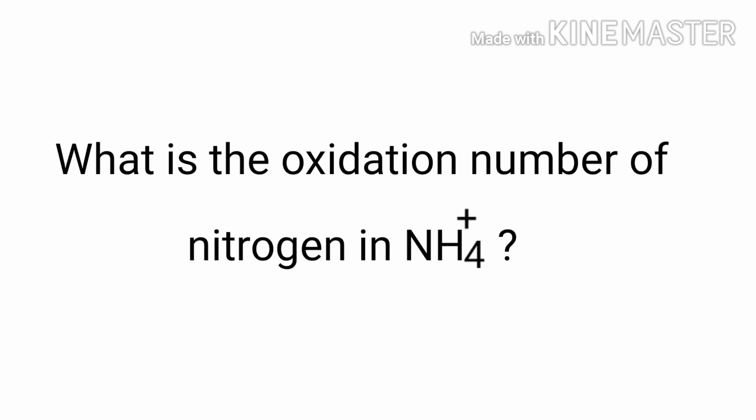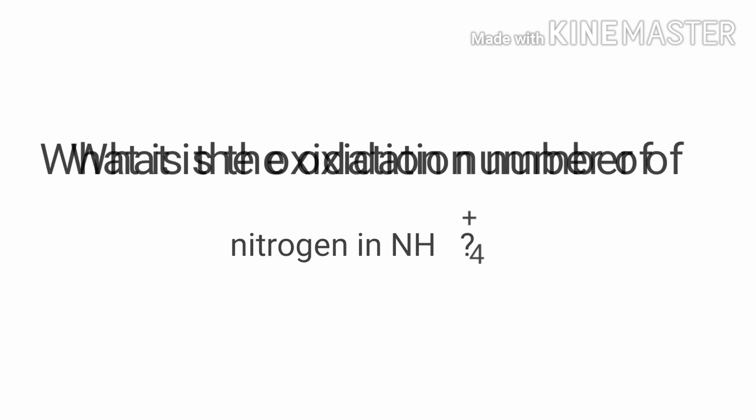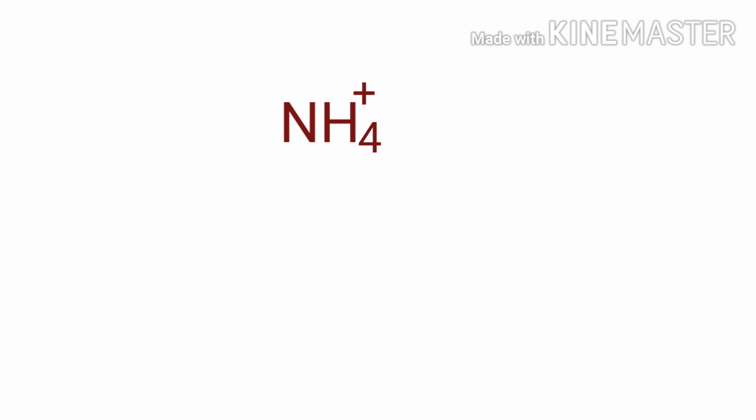What is the oxidation number of nitrogen in ammonium ion? We can use the oxidation number rules to determine oxidation numbers. The ammonium ion is an ionic compound with the overall oxidation number of plus one. Therefore we know that the sum of the oxidation numbers of the atoms is equal to plus one.